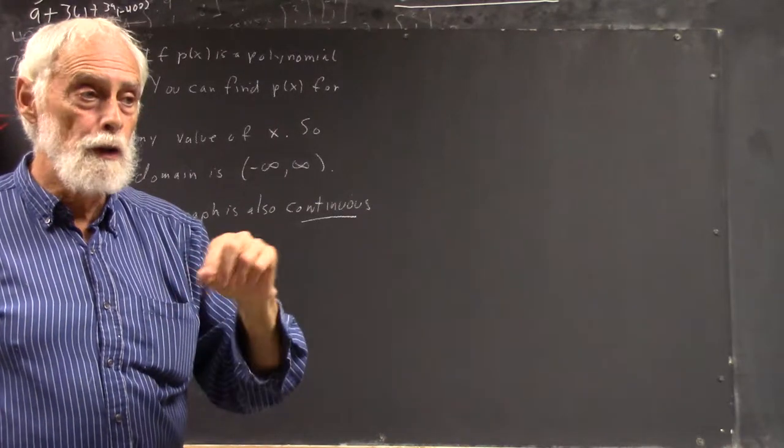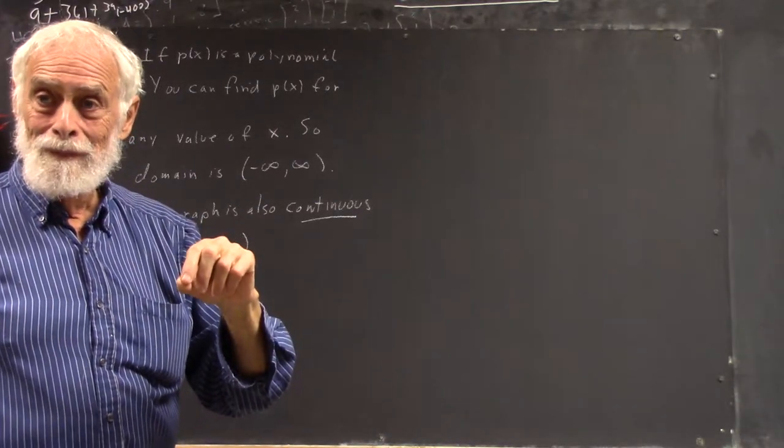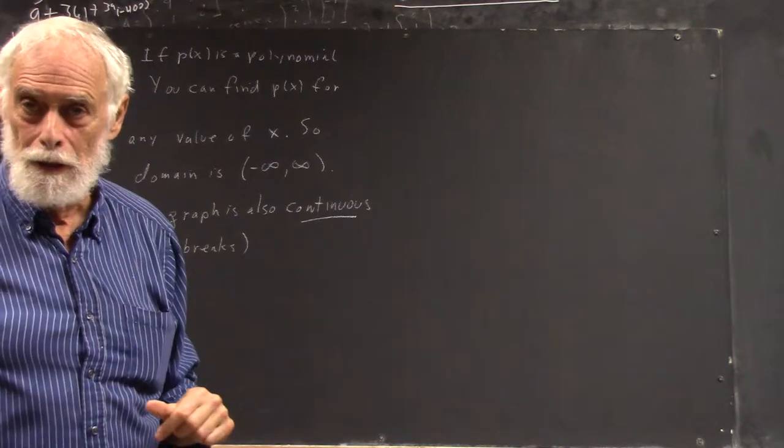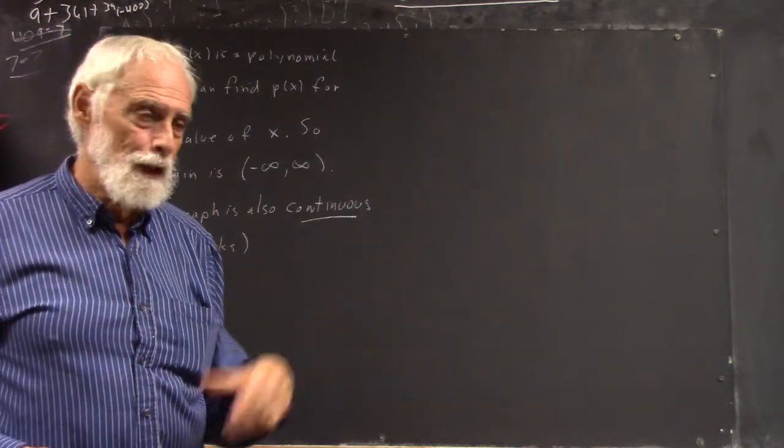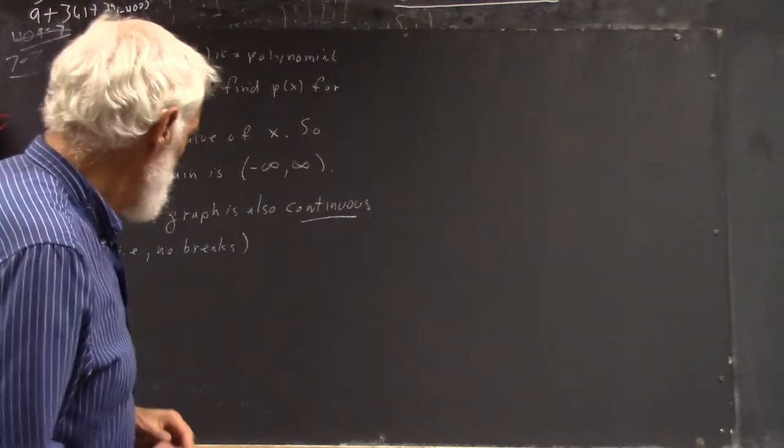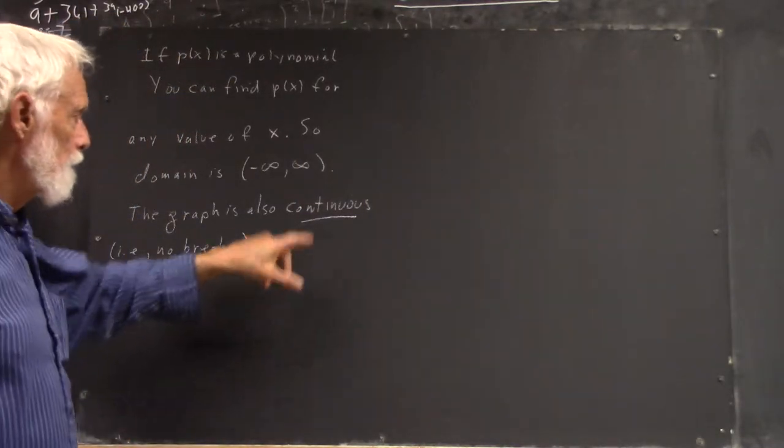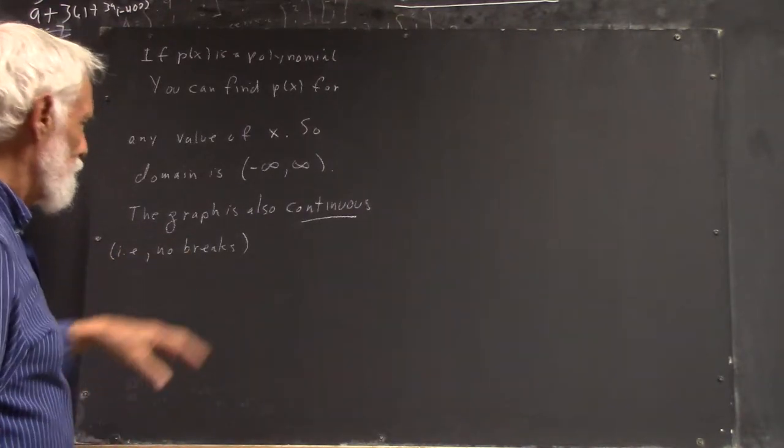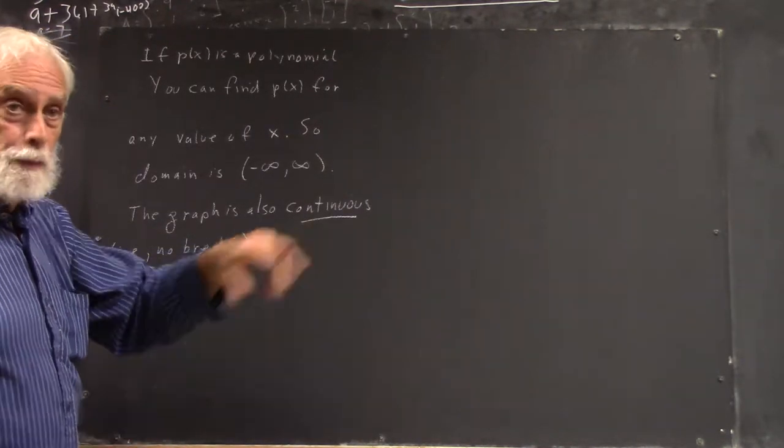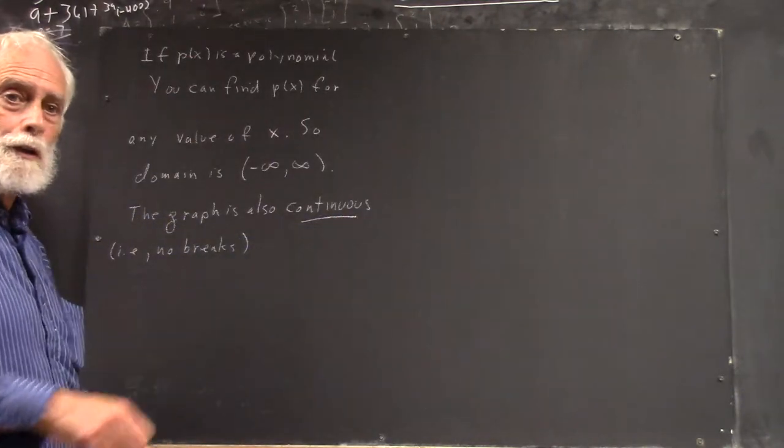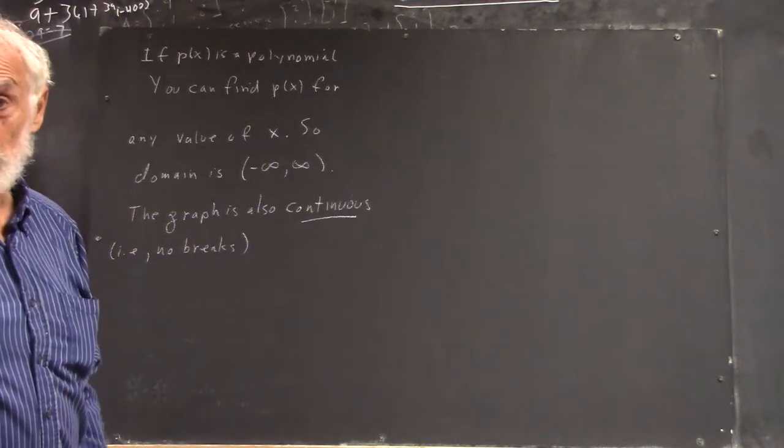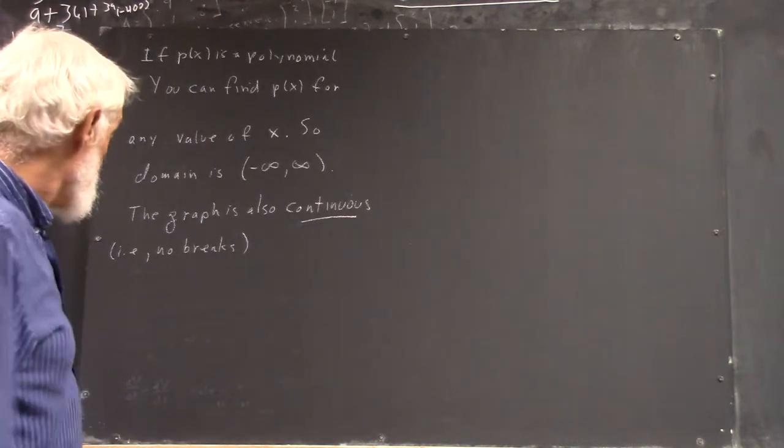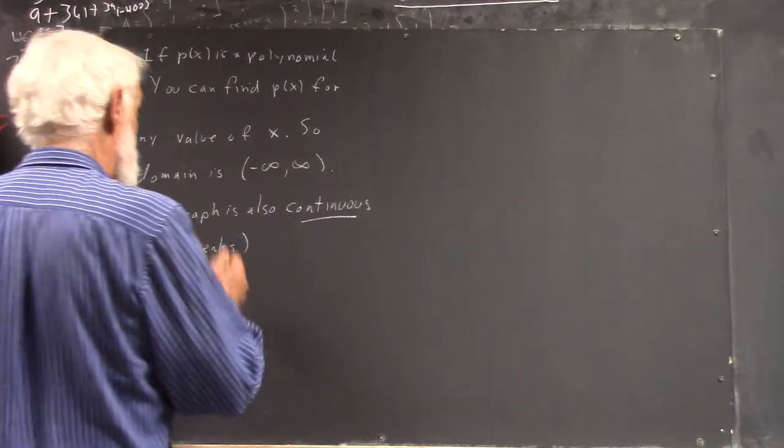Put two numbers that are close together. If you make them close enough, you can make the values as close together as you like. Now that's an idea that you really formalize in calculus. It just means the graph can be drawn without taking your pen off the paper on any of them. So there are no breaks anywhere.